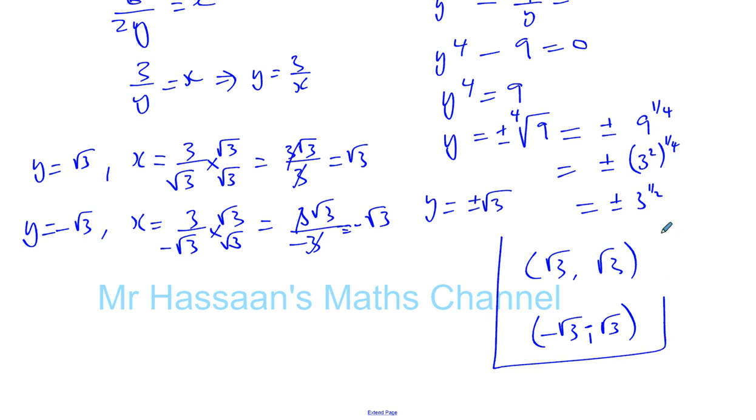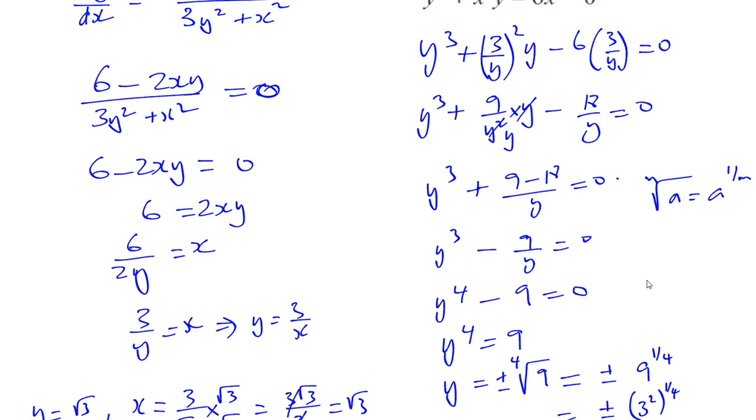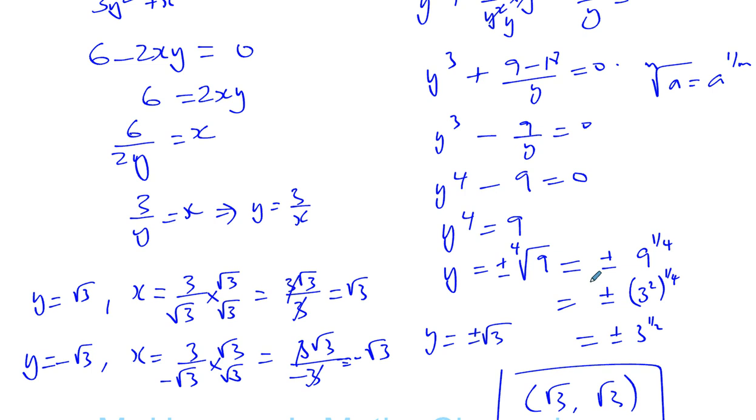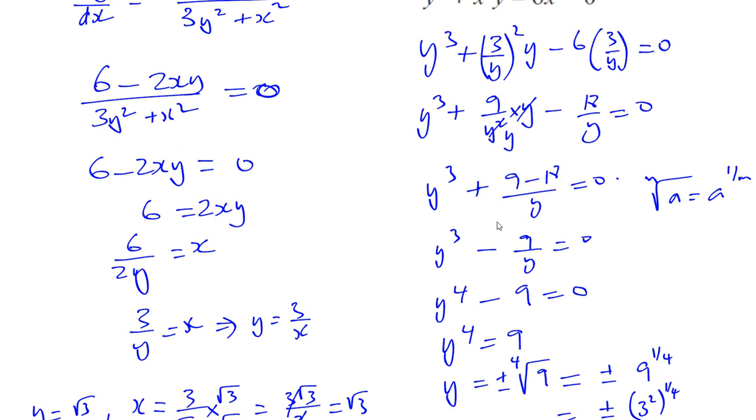So here we have our two points. Those are our places where the gradient is 0 on this function, and we have solved this problem.